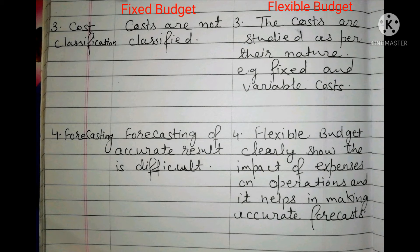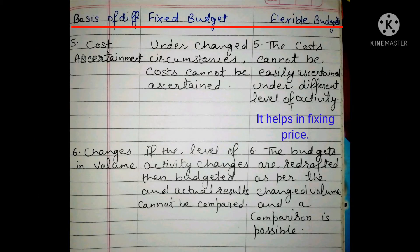The fifth point is cost ascertainment. Under fixed budget, under changed circumstances, costs cannot be ascertained. Whereas under flexible budget, costs can be more easily ascertained under different levels of activity, and it also helps in fixing price.